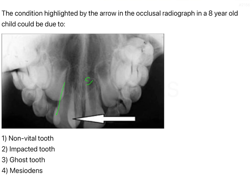In between the two central incisors, you have another tooth-like structure which is being developed, and that root has also just undergone development. There is no complete development of the root — there is no apical closure. This tooth-like structure is radiopaque and it is occupying the place right in the center of the entire maxillary arch.